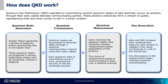You might be curious about how QKD actually works. QKD operates by transmitting random quantum states of light particles known as photons through fiber optic cables between communicating parties. These photons collectively form a stream of qubits representing ones and zeros, just like in a binary system. QKD employs the principles of quantum mechanics to establish secure communication channels. Let's look at an overview of this process.